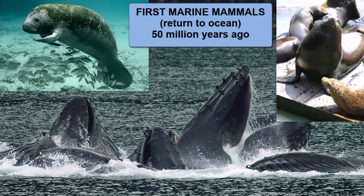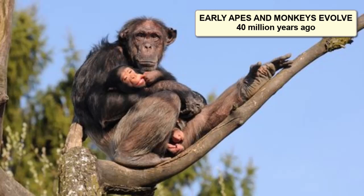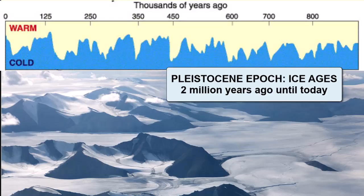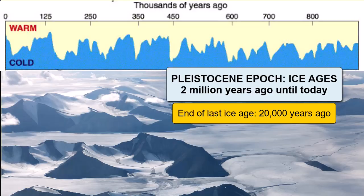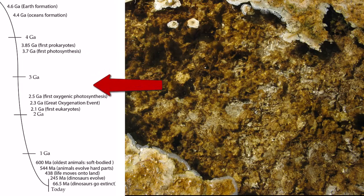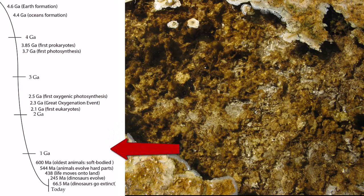50 million years ago, some land mammals returned to the ocean, evolving into whales, sea lions, seals, and other marine mammals. The earliest monkeys and apes evolved 40 million years ago, and the oldest evidence of early bipedal hominids is 4 million years ago. 2 million years ago, we began the period of cyclic ice ages that we are coming out of today; the last ice age ended only 20,000 years ago. Understanding the magnitude and scale of Earth's history is a challenging task for organisms that live only on average 75 years, but it's a challenge that must be tackled if we want to understand the important processes that created the world around us and continue to shape it today.